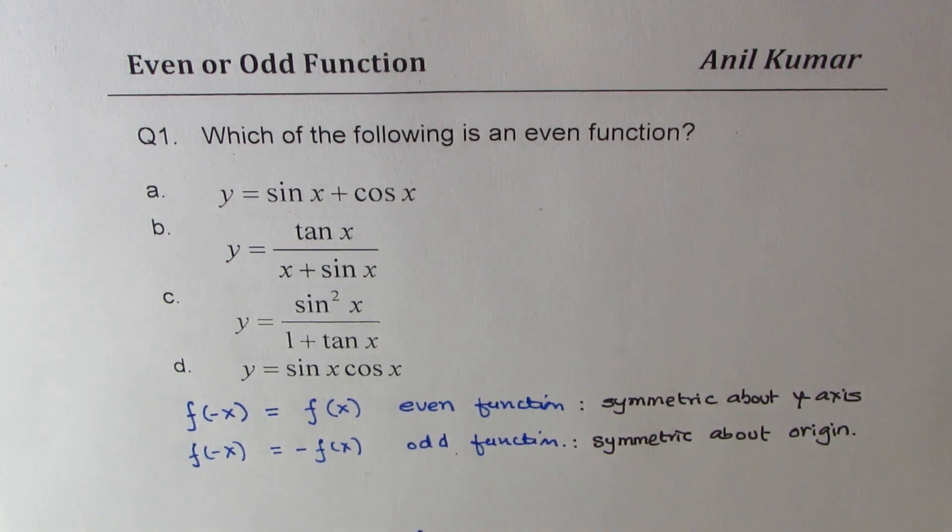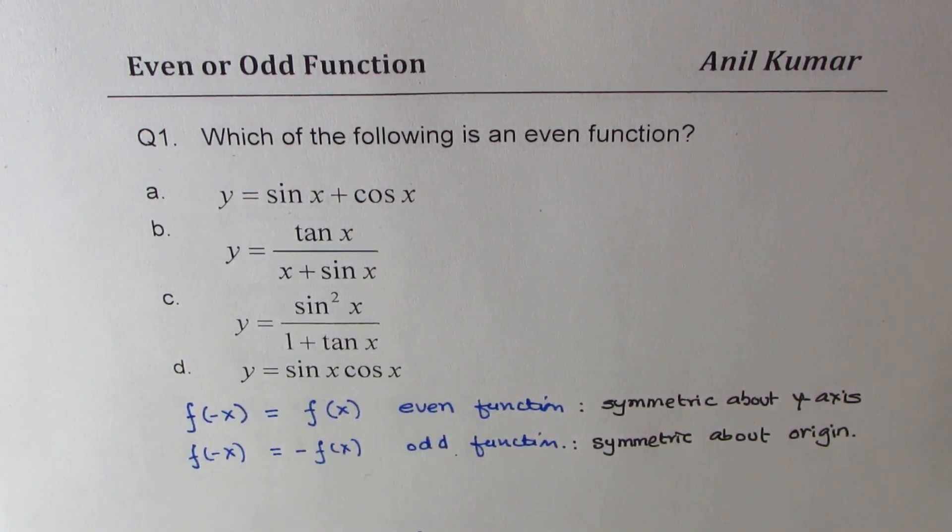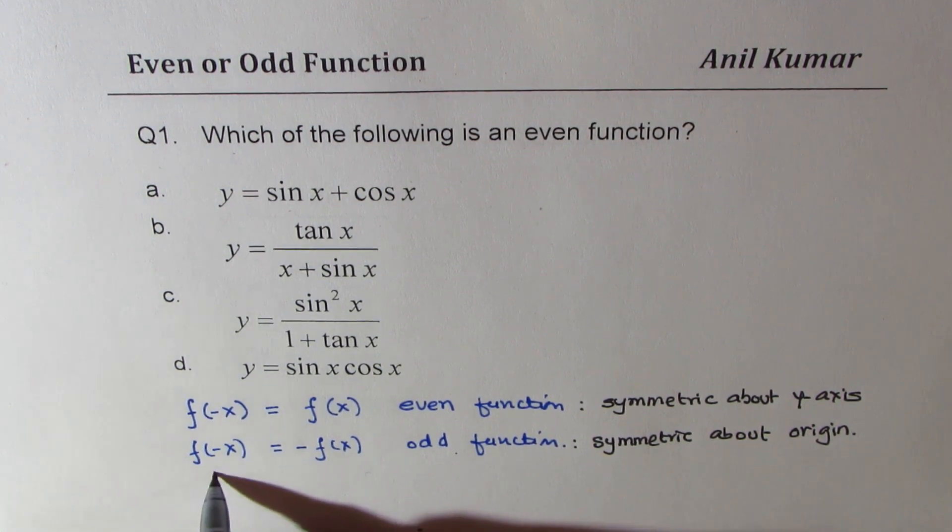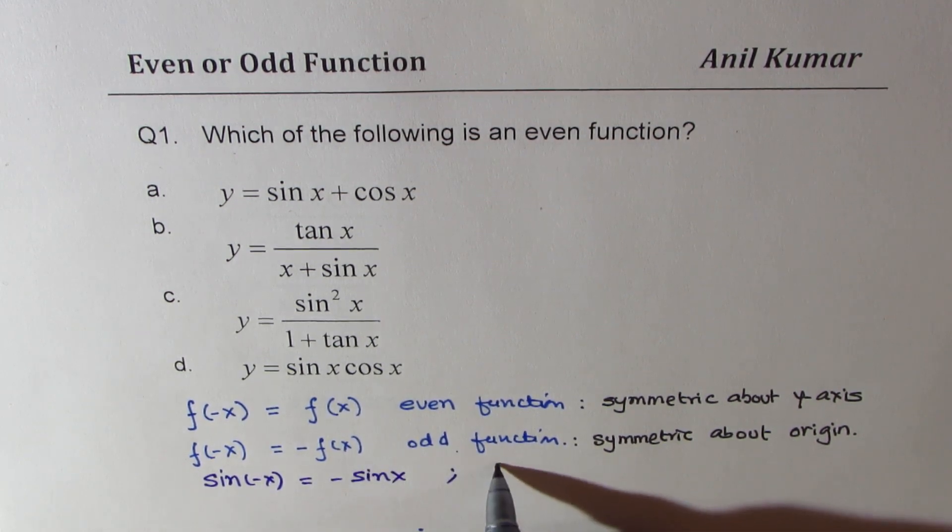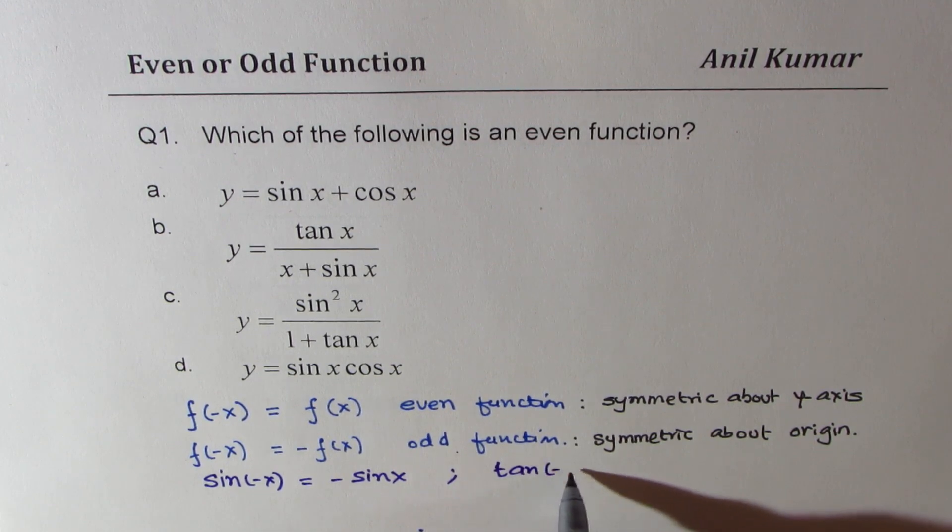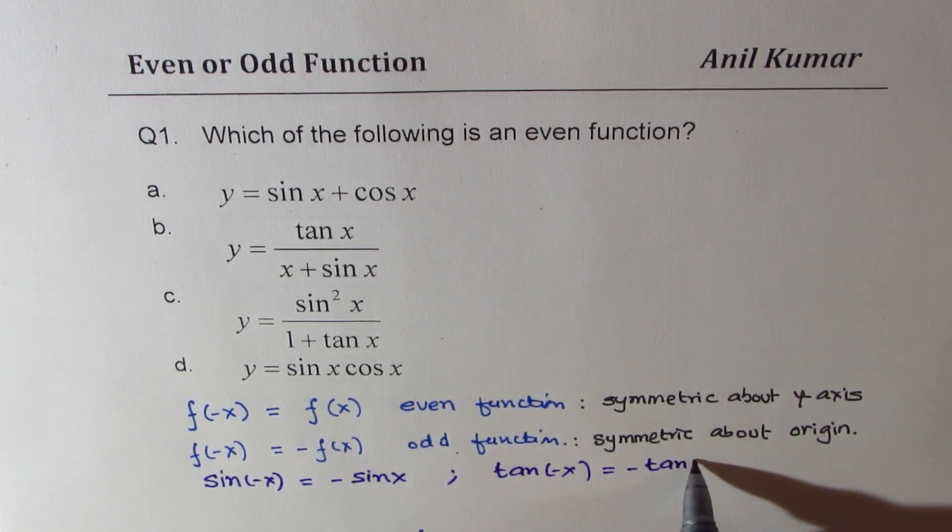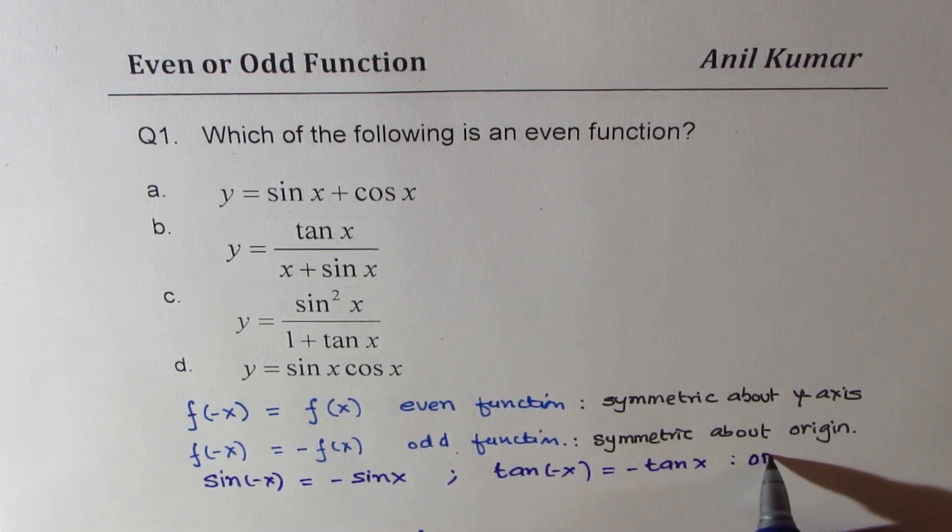When we are talking about sine and cosine functions, then which are even and which are odd? Well, we know sine of minus x is equal to minus sine x. And we also know tan of minus x is equal to minus tan x. So both of them are odd functions.